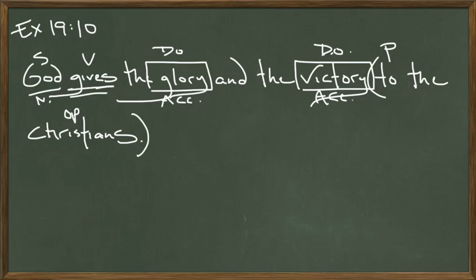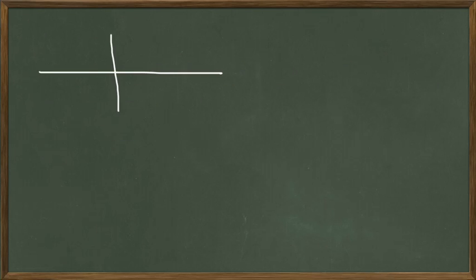Since the Christians are receiving the glory and the victory, they are in the dative case. Latin doesn't have any article adjectives, so I just cross them out, even though I still diagram them. 'And' is a conjunction. So we now have the sentence parsed, or labeled. Now we have to go diagram it, then we'll come back to this page and translate it.